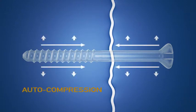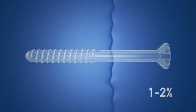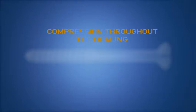Auto-compression involves lengthwise contraction of the screw by 1-2% and related expansion in the diameter. This memory effect based on mechanical activity both creates compression on the fracture line and prevents the screw from loosening as metal screws commonly do.